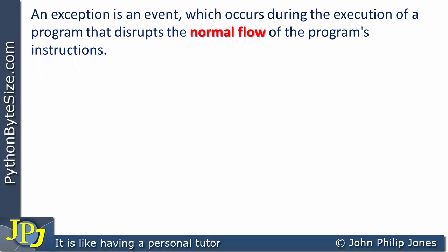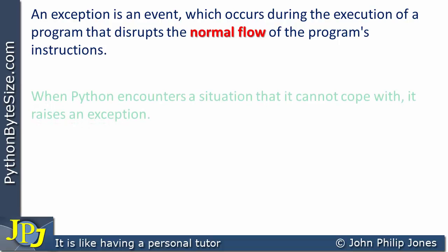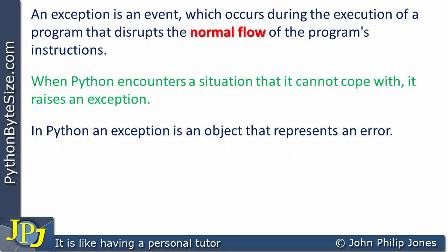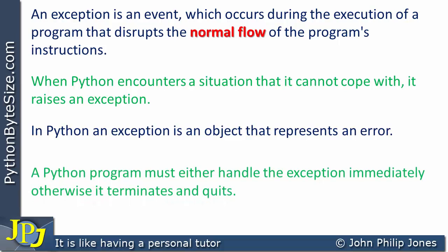Let's consider the main points of an exception. An exception is an event which occurs during the execution of a program that disrupts the normal flow of the program's instructions. When Python encounters a situation it cannot cope with, it raises an exception — such as an attempt to divide by zero. In Python, an exception is an object that represents an error. A Python program must either handle the exception immediately, otherwise the program will terminate and quit. If an exception is raised, the program simply terminates.